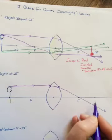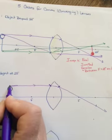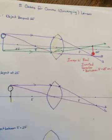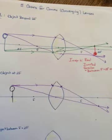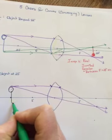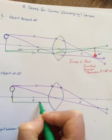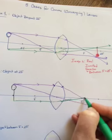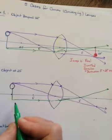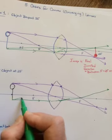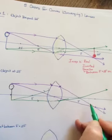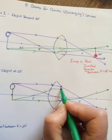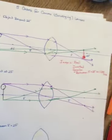A ray going in through the center should pass straight through. From the bottom, a ray going in parallel to the principal axis will get bent in such a way that it'll come out through f. And a ray that goes in through f should get bent in such a way that it's going to come out parallel to the principal axis.